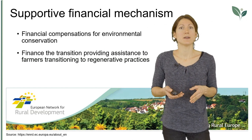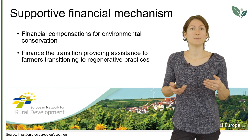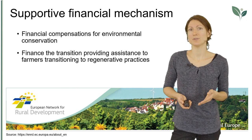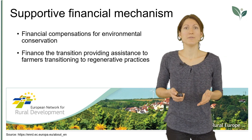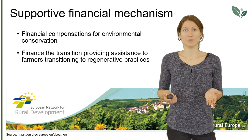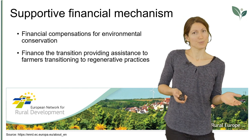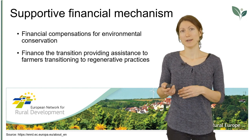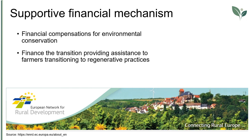How is this approach integrated in the current financial mechanism? A financial compensation for environmental conservation that pays farmers to achieve improved ecosystem outcomes has been set up with so-called eco-schemes by the European Commission within the Common Agricultural Policy, to achieve the EU's climate objectives and protect the environment. 25% of the direct payments of the CAP are to be allocated to eco-schemes, providing stronger incentives for climate- and environmentally-friendly farming practices. Another financial support is given by the European Agricultural Fund for Rural Development, the funding instrument of the second pillar of the EU's CAP.